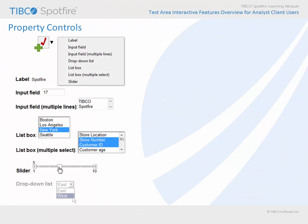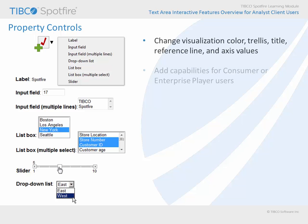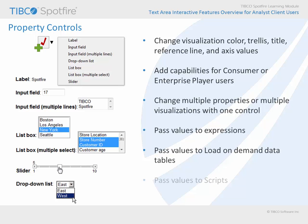Property controls allow you to collect, change, or display values which are stored as properties within the analysis document, separate from the data in underlying data tables. These values may be configured to perform a variety of tasks, including changing visualization properties, which either make it easier for you to perform routine analysis chores, or add capabilities which would not otherwise be available for users of other Spotfire client types.